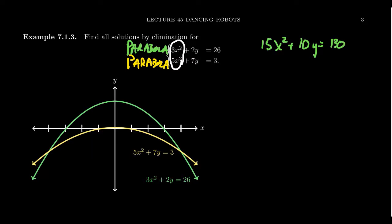Then we take the second equation and multiply it by -3. So we get -15x² — excuse me, multiplying everything by -3. So we take -3 times the second equation and +5 times the first. That gives -3 × 7y = -21y, and -3 × 3 = -9. We're then going to add these equations together, combining like terms.